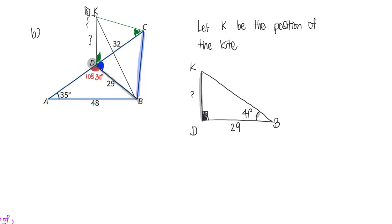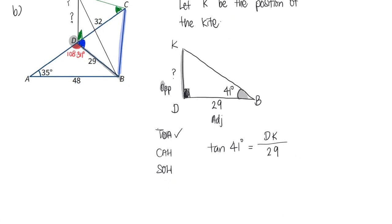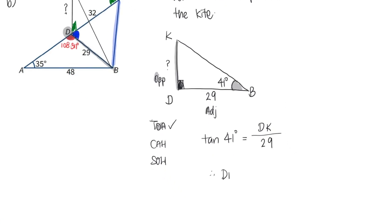With respect to angle 41 degrees, I will have my adjacent side and opposite side. Which one should I use? O and A. Yes, tangent 41 degrees will be equal to opposite, which is my DK, over 29. So all I have to do is multiply 29 on both sides, and this will give me 25.209 meters.